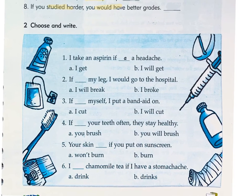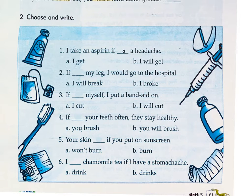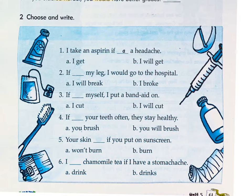In the second exercise we have to choose the best conjugation for each one. For example, number one says: 'I take an aspirin if I get a headache' — not 'if I will get a headache.' Think about it in Spanish: me tomo una aspirina si me da dolor de cabeza — not si me va a dar. You cannot predict your headaches, so you take medicine when you feel pain or have a necessity. You only have to write the correct letter A or B on the line, and we'll check it later in class.